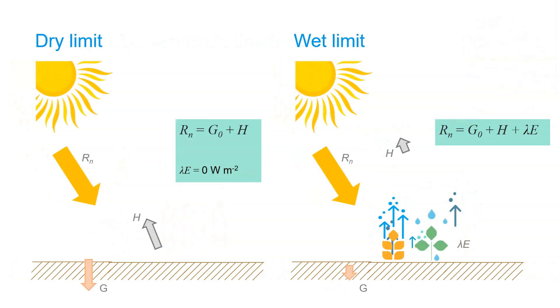Now let's have a look at the surface energy balance in extreme cases. At a dry limit, when there is no soil moisture or surface water bodies or healthy crops, the latent energy for evapotranspiration equals 0 watts per square meter. And the energy balance reduces to the sum of the soil heat flux and the sensible heat flux, which you see on the left side.